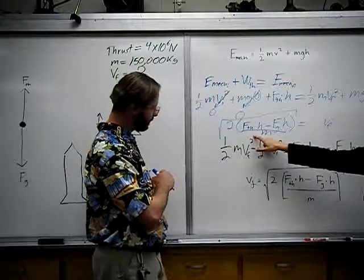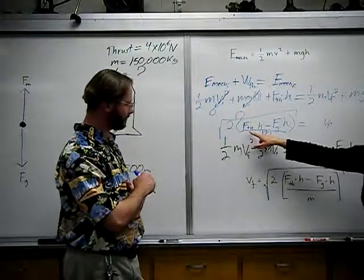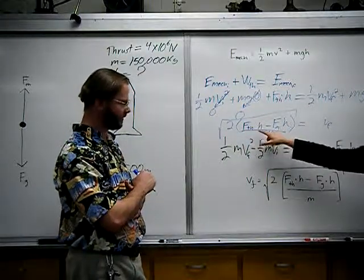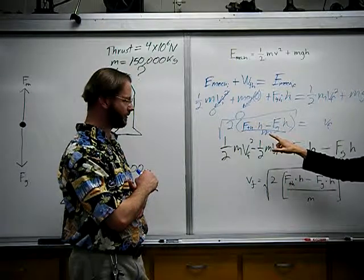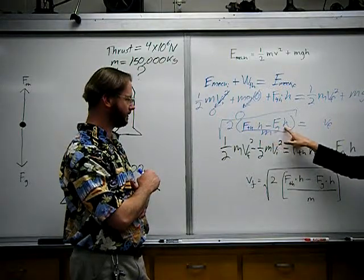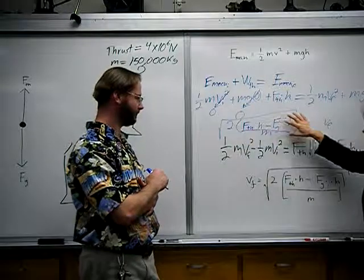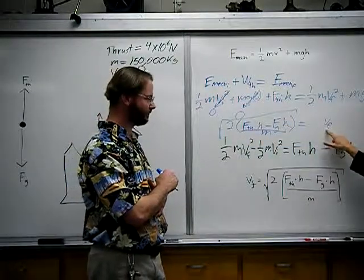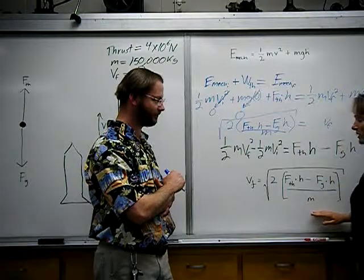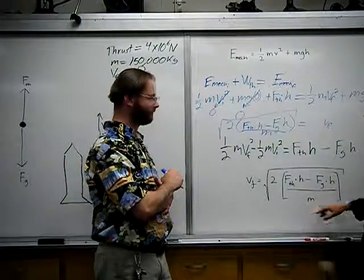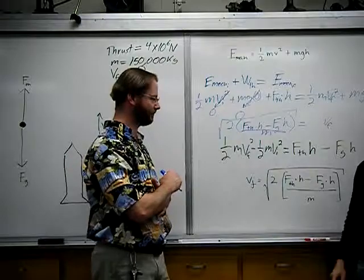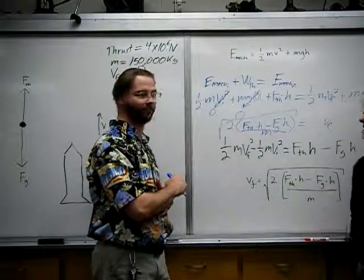And we have the same equation. 2 times the force of the thrust times the displacement minus the force of gravity times height all over the mass. All under the square root sign gives us the final, which is exactly what we got in the earlier video when we did it with the change in kinetic energy equals work.